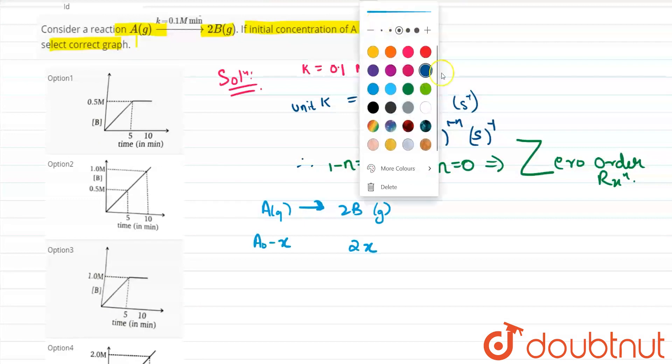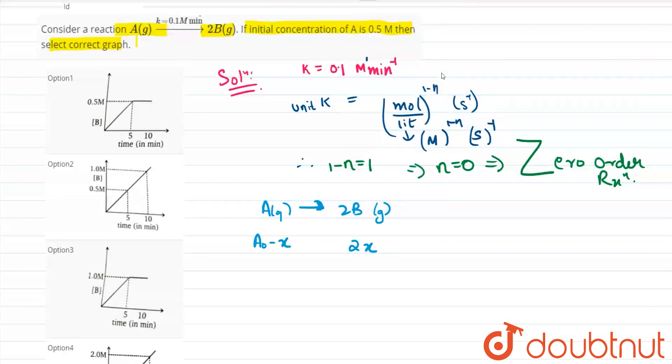Now for zero order reaction we know that x equals kt isn't it?